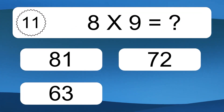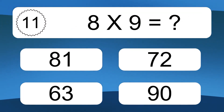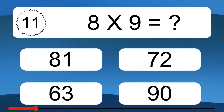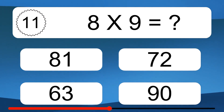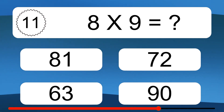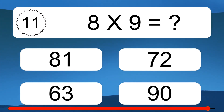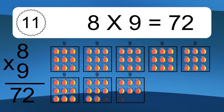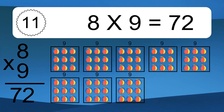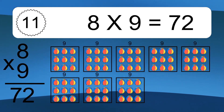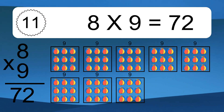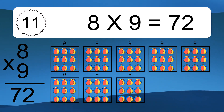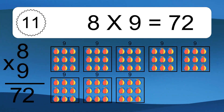8 times 9 equals what? 8 times 9 equals 72. We have 8 boxes, and each box has 9 colorful balls inside. If you count all the balls in all the boxes together, you will have 8 times 9 balls. This equals 72 balls.